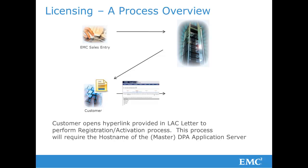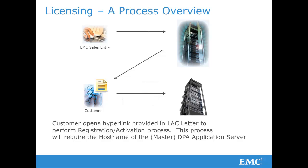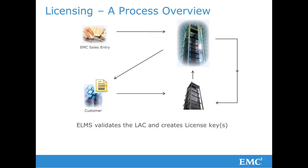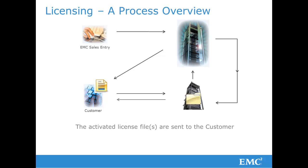When DPA has been installed and is ready for licensing, the customer may open a hyperlink contained within the LAC letter to perform the registration and license activation process. A key part of the registration is to supply the host name of the DPA application server, or the master if this is a clustered implementation. The LAC detail is processed, ELMS validates the LAC, and a license key or keys are produced. The activated license file or files are then sent to the customer.